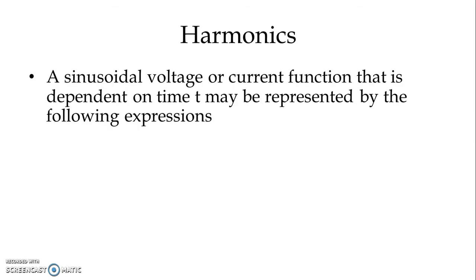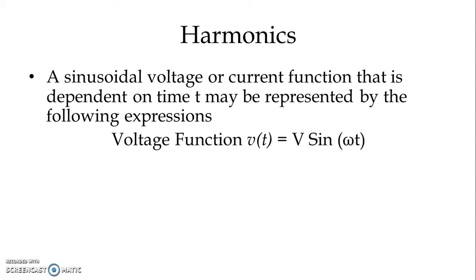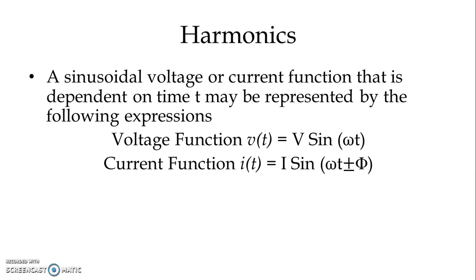Let us take a sinusoidal voltage and current function dependent on time t, represented by the following expression. The voltage function v(t) is equal to V sin(ωt), and the current function i(t) is equal to I sin(ωt ± φ), where capital V and capital I are the peak values of voltage and current respectively.